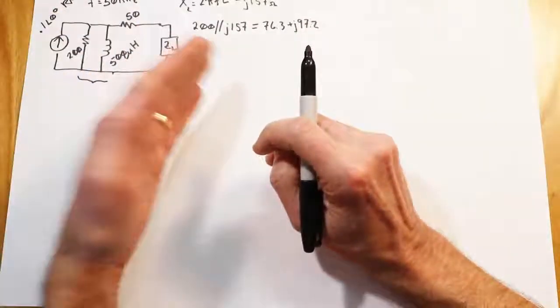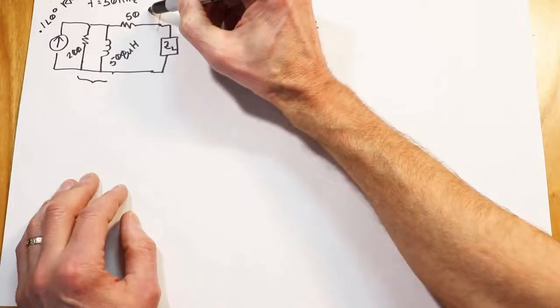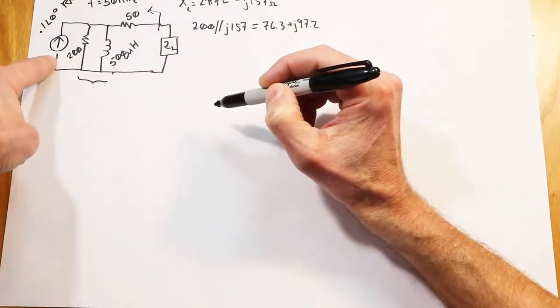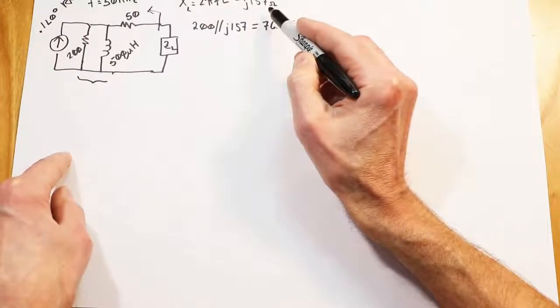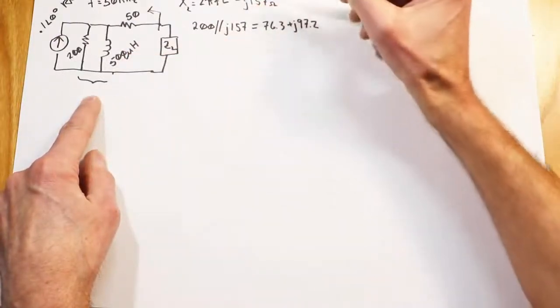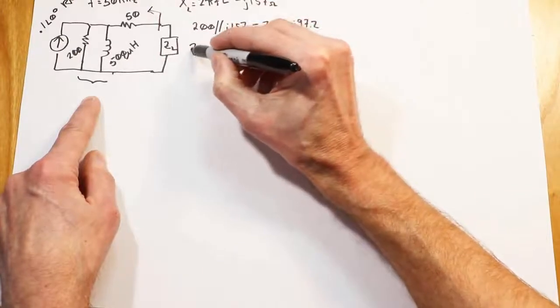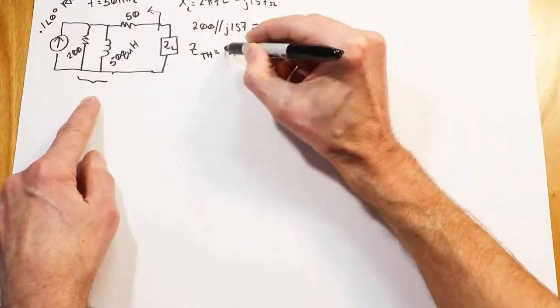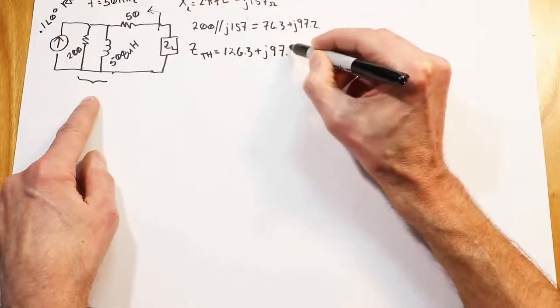Now, the total Thevenin impedance. So we would sit here at the load looking back in this way. This is our viewpoint, if you will. So I want to look back in this way and thevenize. What we would do is replace the current source with its ideal internal impedance, which would be an open. And what we wind up with is this parallel combo, the 157, and the 50 ohm in series. So the total Z-Thevenin on this thing is going to be essentially this value plus 50 ohms. So that's our Z-Thev. 50 plus that is going to get us 126.3 plus J97.2.